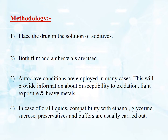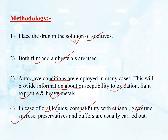The methodology for solution state stability: first, place the drug in a solution of additives. Next, store it using flint and amber vials. Then provide autoclave conditions, which gives information about oxidation, light exposure, and heavy metals. In case of oral liquids, we check compatibility with ethanol, glycerine, sucrose, preservatives, and buffers. This is the methodology used for checking solution state stability testing.